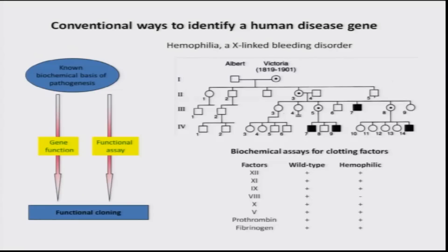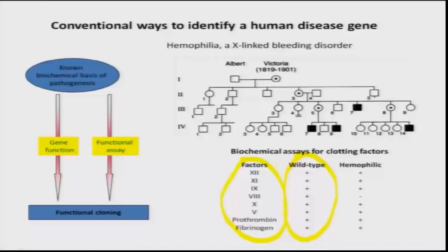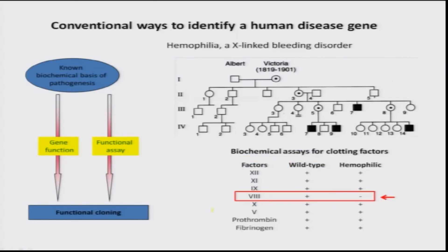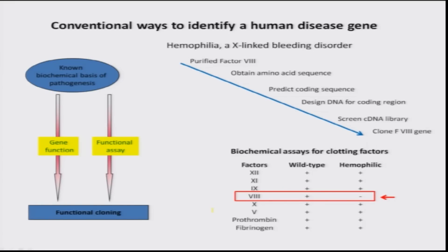There are many different factors involved in blood clotting. In all of us who are normal, all these factors are very active. If you do a biochemical assay for these factors, you will find they are working. What they did was use a very similar approach to identify which particular factor could possibly be abnormal in individuals with hemophilia — and they found it was Factor 8. That factor was defective in these individuals; you do not see Factor 8 being active.